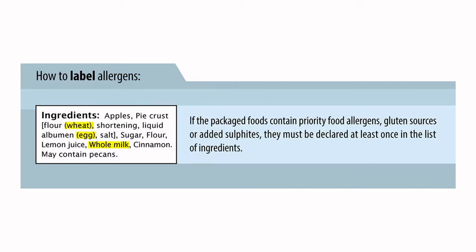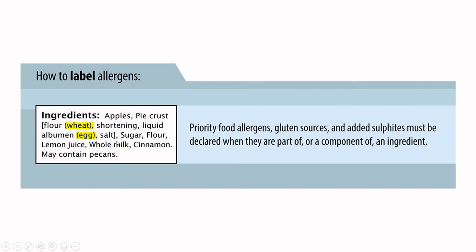If you have a packaged food with priority allergens, gluten, or sulfites, they have to appear at least once in the list of ingredients. In the apple pie example, flour was listed and wheat was declared once — therefore it does not necessarily have to be repeated, though you are not wrong to repeat it. As long as it appears once, that satisfies the requirement.